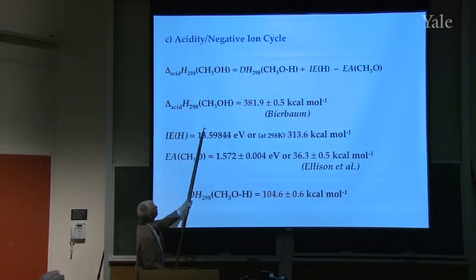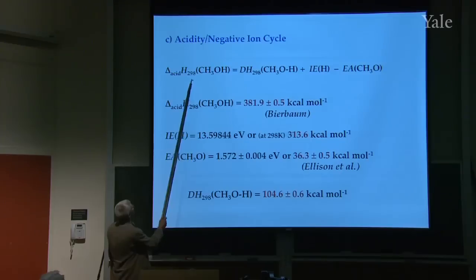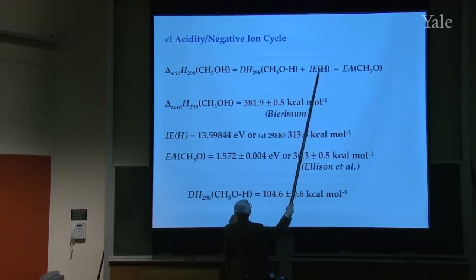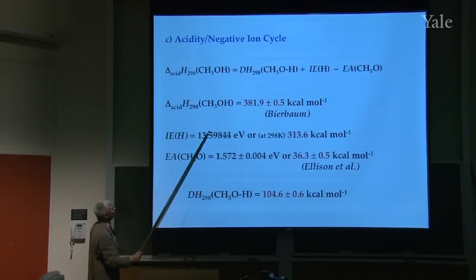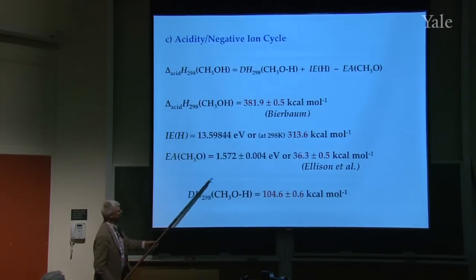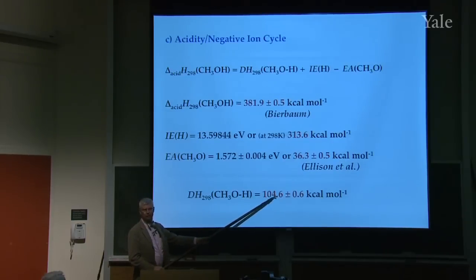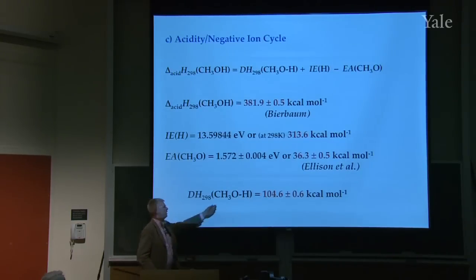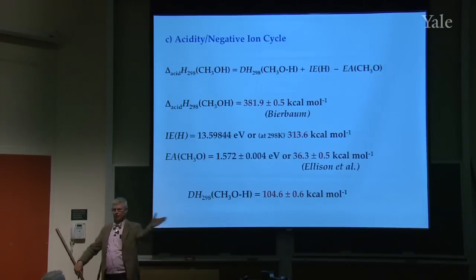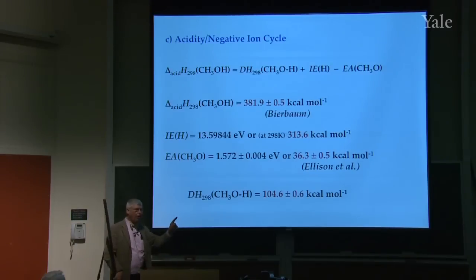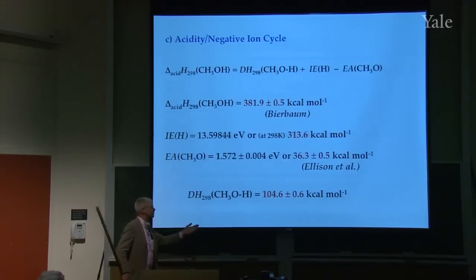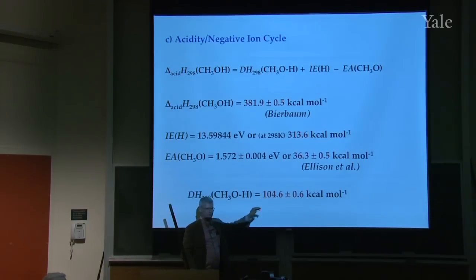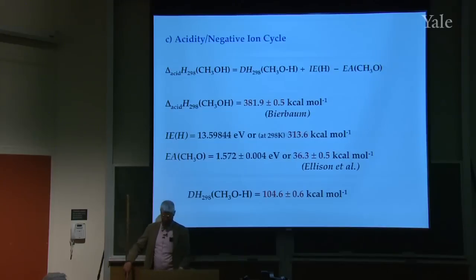So now we can do what we're going to do. If Bierbaum has the acidity, and you know the electron affinity, and you know the ionization energy of hydrogen atom — when you put these numbers in, you get out that the bond energy is about 105 kcal/mol. This is the bond energy of methanol in intergalactic space with nobody else around. All of these people who like to think they can calculate everything with quantum mechanical programs — this is the number they have to get. There is no place to hide. This is a cleanly measured value.